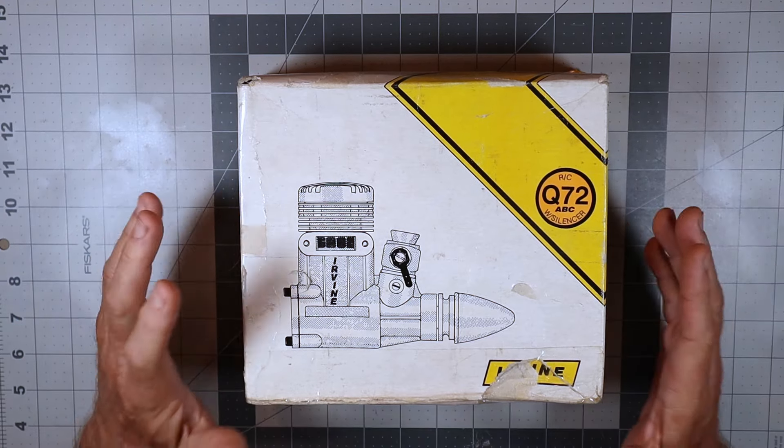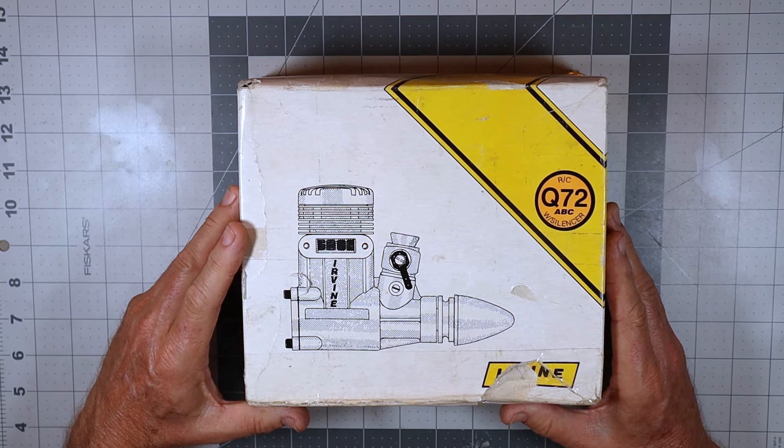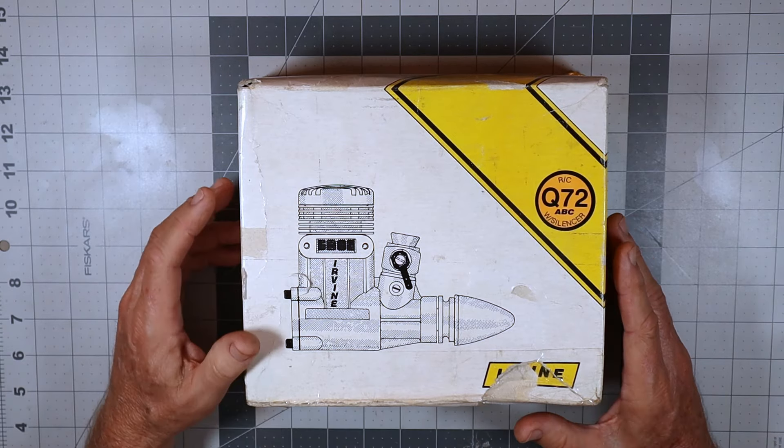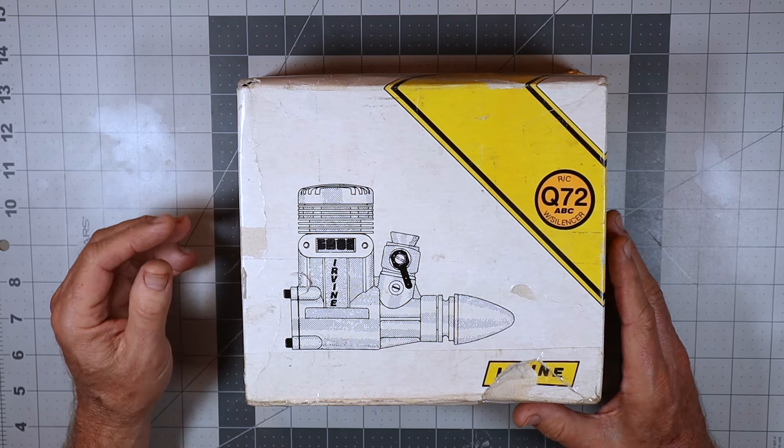His name is Don and he has sent me his Irvine Q72 ABC engine. Now this is an engine I don't know that I'd really ever heard of before Don had mentioned it. I'd heard of the Irvine 72 but never really the Q72.